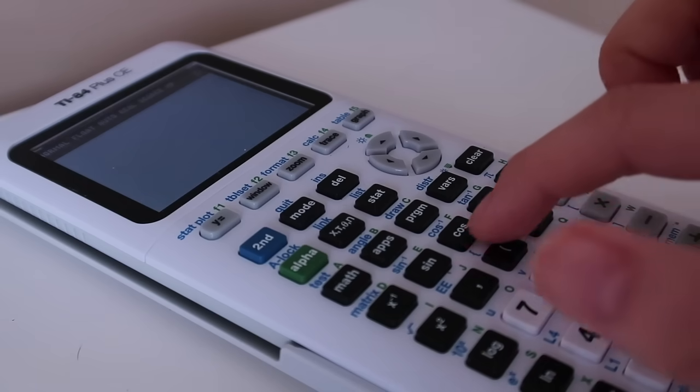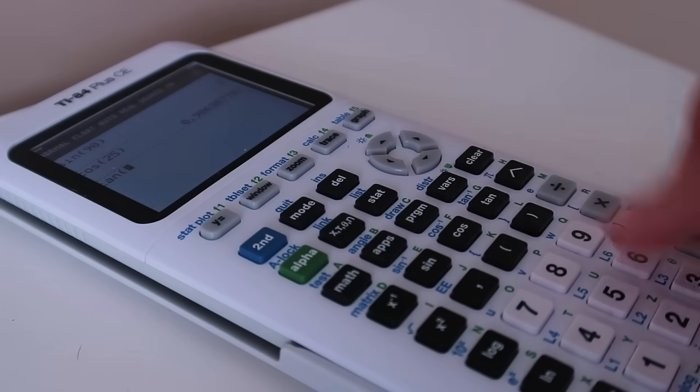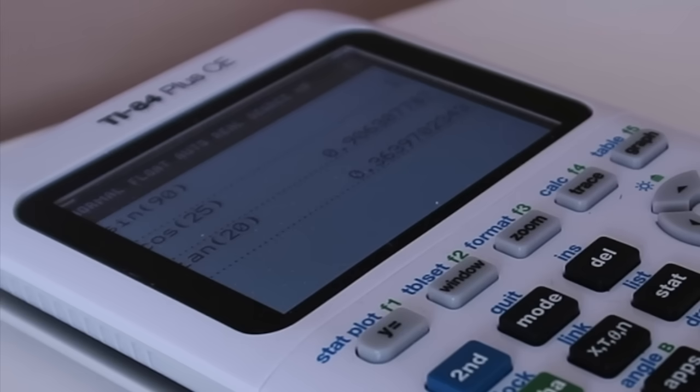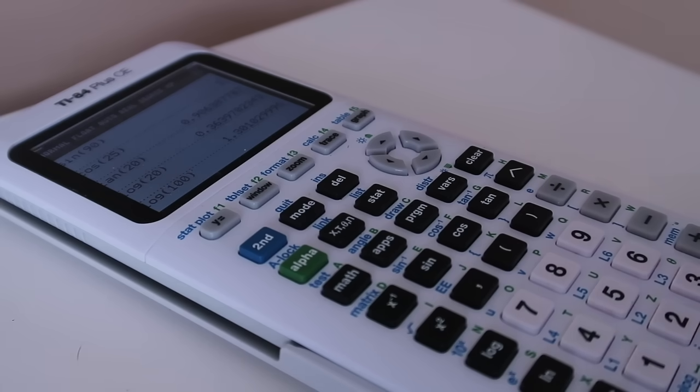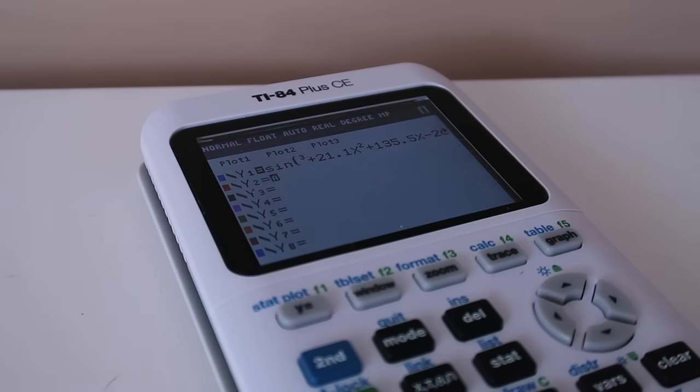So while this calculator covers all the trig related stuff like sine, cosine, tan and then the inverses or like logs, so basically all the basic functions you would find on a scientific calculator. Now additionally as the name suggests, a graphing calculator also helps you graph equations. All you have to do is just go under y equal and plug in your equation and then it'll graph the entire thing for you.